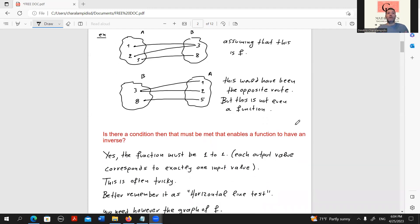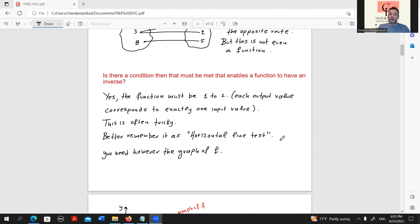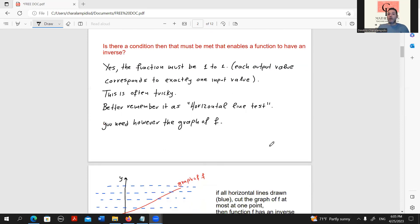We have established that we know if a function that undoes f exists, then this is called an inverse function. We cannot always find an inverse function. Is there a condition which, if met, then enables a function to have an inverse?